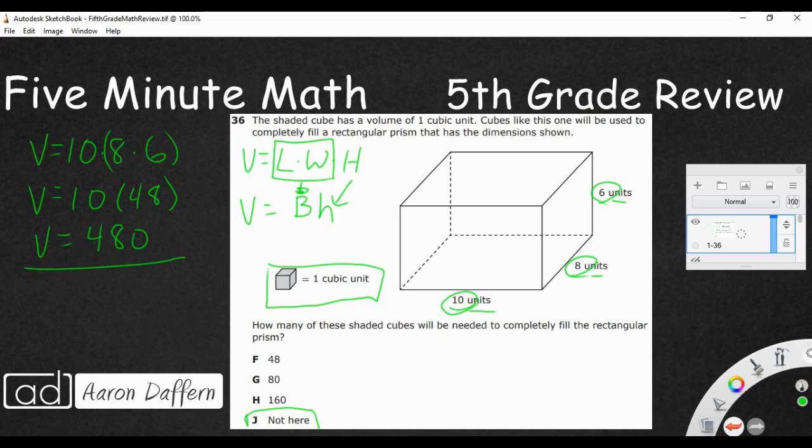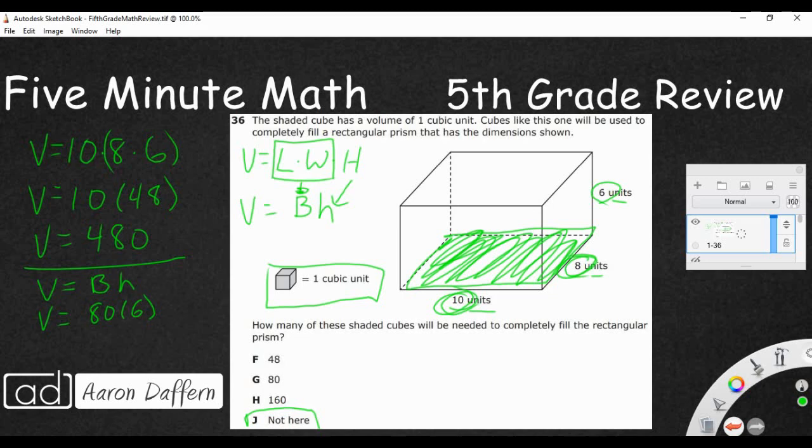But what if we use this other equation? Volume equals base times height. Well, the base is going to be the area of this very bottom right here. So, if we look at the area of this bottom, that's going to be 8 times 10. So, we can just say 8 times 10, that's going to be 80. And then we're going to multiply that by the height, which is going to be 6. So, 80 times 6. Well, 8 times 6 is going to be 48. So, if we have 80 times 6, it's going to be 480. Either way, you're going to get the exact same answer. It's going to be units and then cubed. But the answer is not here.